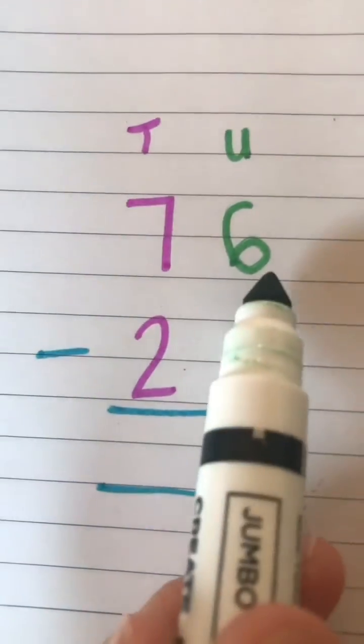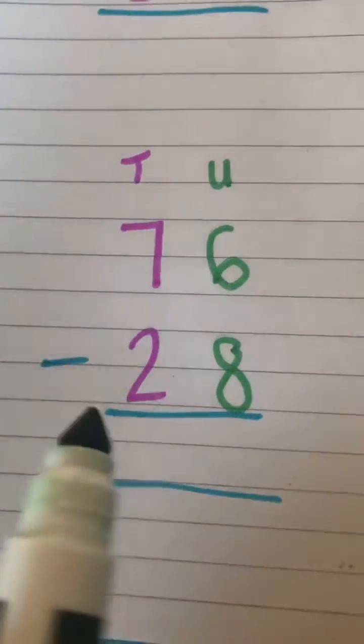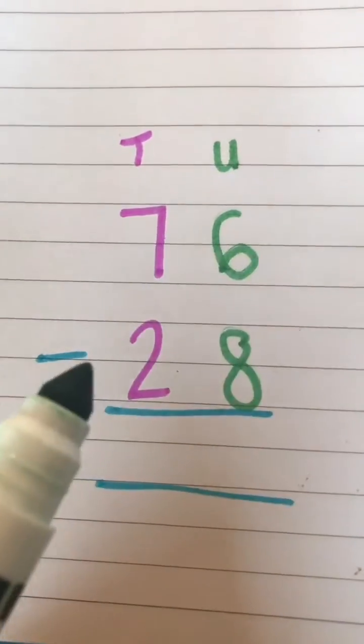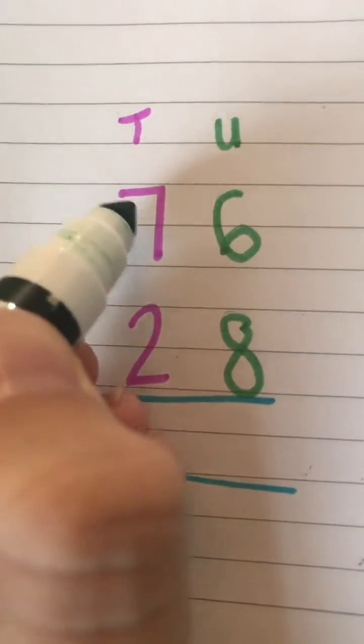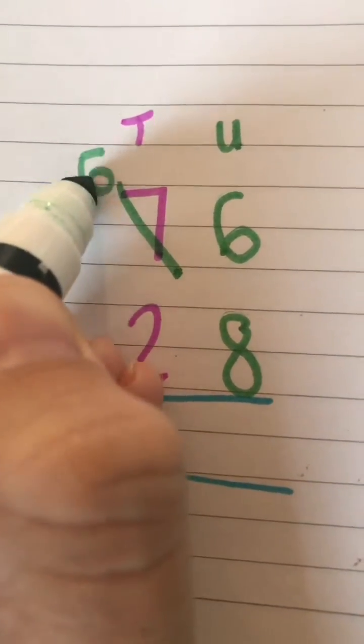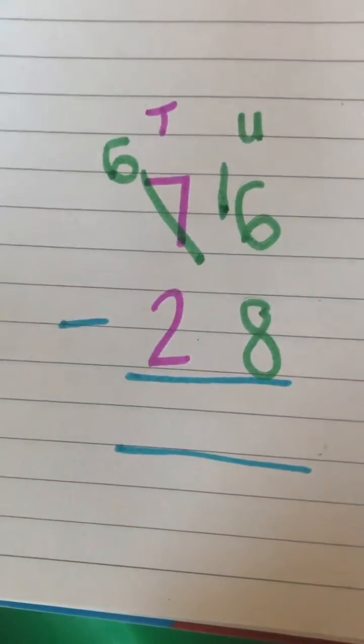going to borrow from this ten next door and give it to the units column. So if I take 10 away from 70, it becomes 60, just like that. And I'm going to give that 10 to my units column, okay? So I'm going to pass it over to the next column. So now I've got 16 minus 8. 16